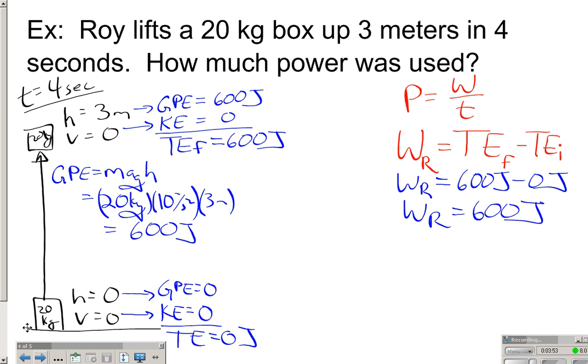So now what we want to do is find the power. So remember, power is just the work that Roy did divided by the time it took him. So he did 600 joules of work. That took him four seconds. Divide it out, and you get 150 joules per second. The rate at which work is done. Roy did 150 joules of work every second. Another way of saying that is he gave the box 150 joules of energy every second. So for every second that he was lifting it, he did 150 joules of work. He gave it 150 joules of energy. So that's our power, 150 joules per second.